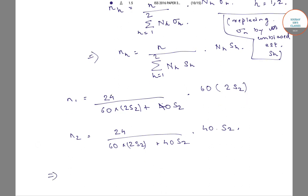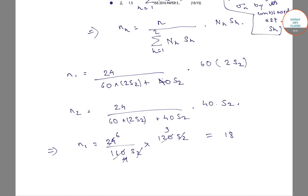Simplifying, n1 equals 24 divided by (120S2 plus 40S2) times 120S2, which gives 24 divided by 160S2 times 120S2. Cancelling S2 and dividing by 40, we get n1 equals 18. Similarly, n2 equals 24 divided by 160S2 times 40S2, giving n2 equals 6.